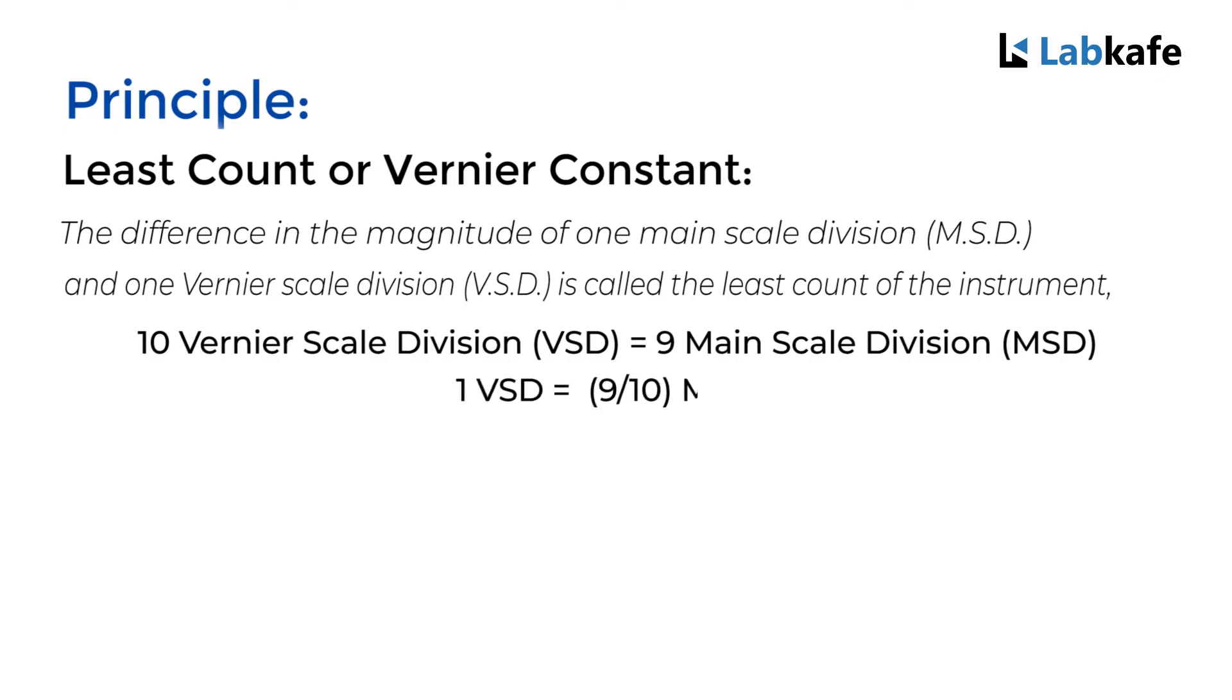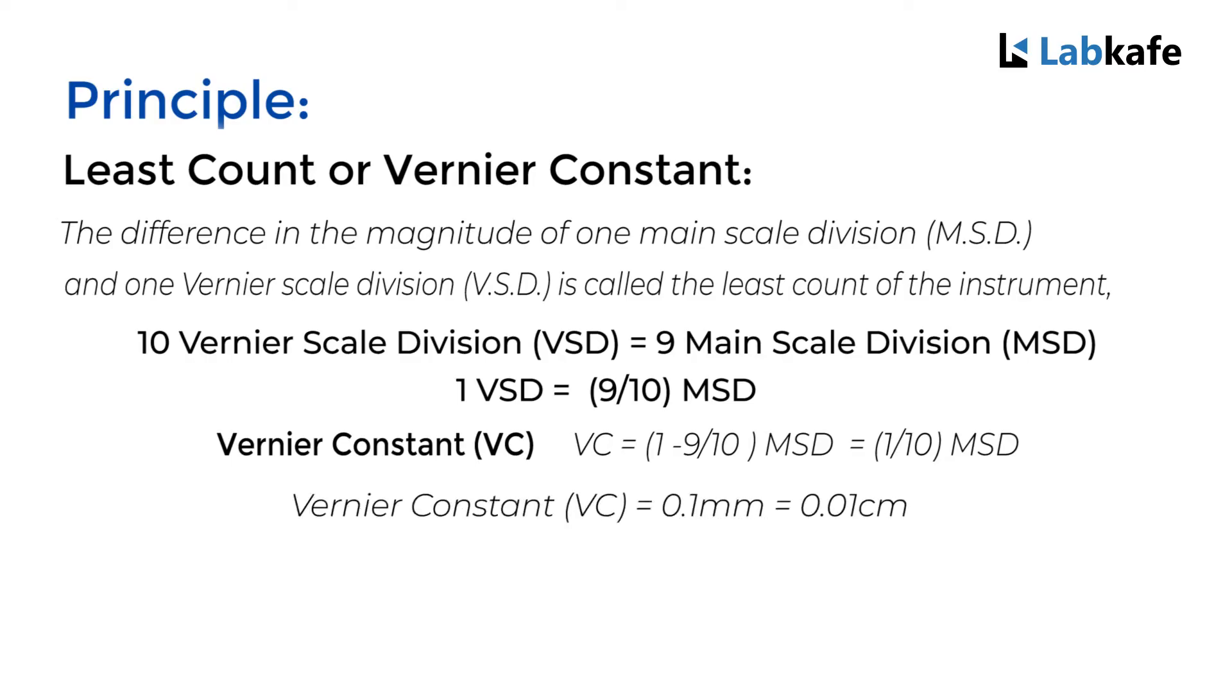Therefore, 1 vernier scale division equals 9/10 MSD. Hence, the vernier constant is 1 minus 9/10 MSD, which is 1/10 MSD. Once we calculate it, we find the vernier constant is 0.01 centimeters.